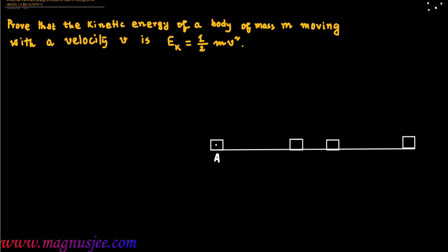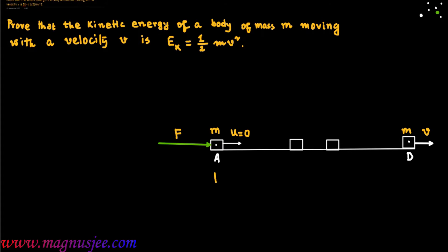In a diagram, a body was at rest at the point A. At the point A, the body of mass M has the initial velocity u equal to 0. An accelerating force F is acted on the body at A, and the body will move from the point A to D. The body will reach the point D and at point D, the body will be moving with velocity v. We have to find the kinetic energy of the body at the point D.